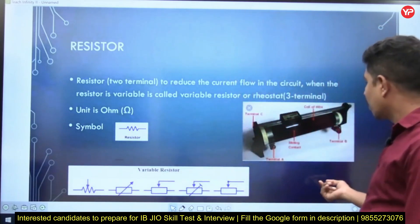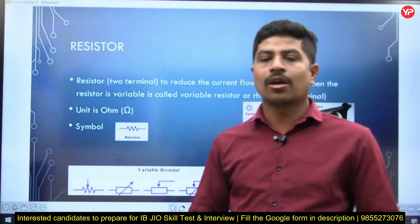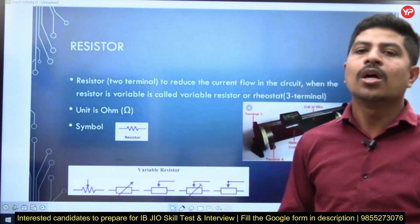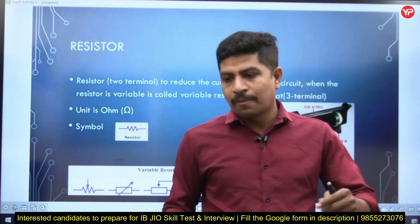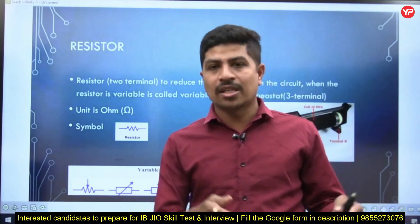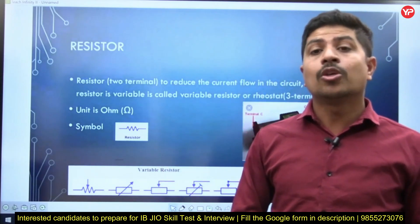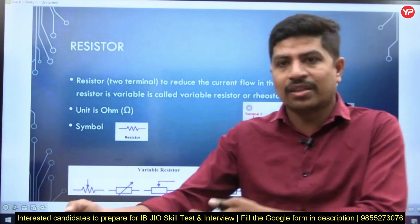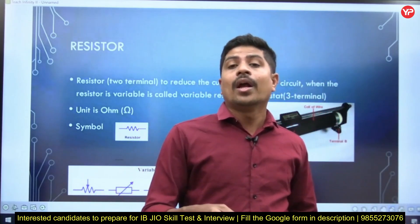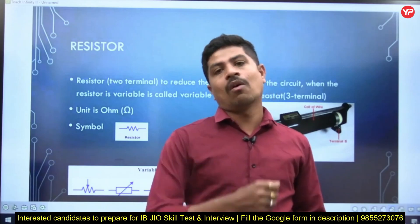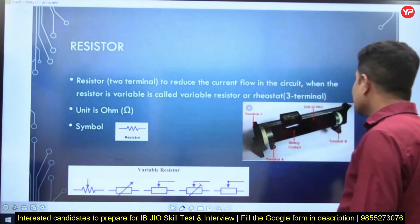You need to know where to connect the resistance. Suppose he asks you: in this circuit I want to reduce the current — use resistance to reduce the current. So take the resistance, connect it, know how to connect it, where to connect it, and how to vary it. That may be one complete task.